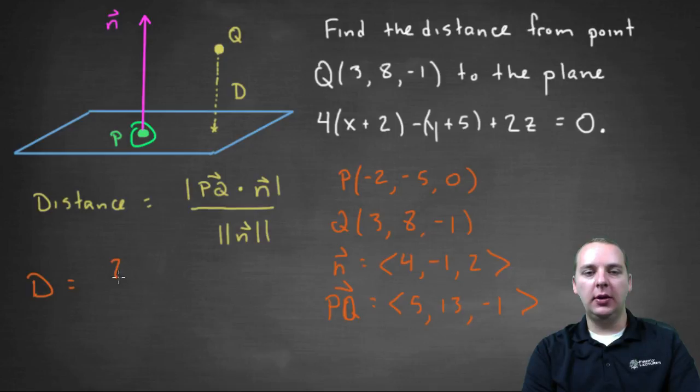So we'd have 20, 4 times 5 is 20. -1 times 13 makes -13. And then 2 times -1, is -2, so we'll have -2.